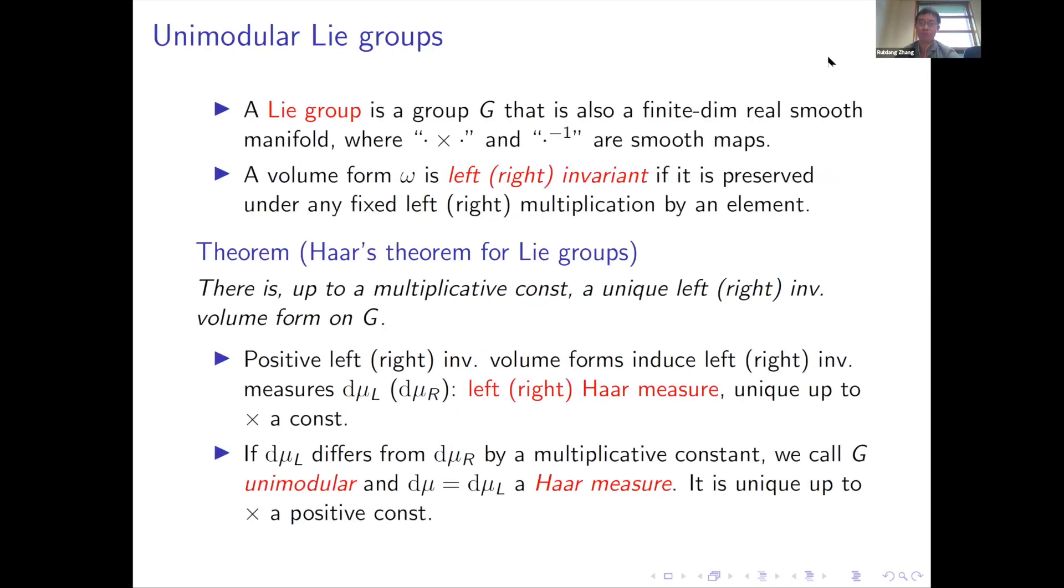So fortunately, the previous speakers already explained what... By the way, can you hear me very well? Okay. So a Lie group is a group that's also a smooth manifold that's compatible with the group structure. And on any Lie group, there's a left Haar measure, there's a right Haar measure that are invariant with respect to left multiplication and right multiplication. And those are unique up to multiplying by a constant. So if they happen to coincide with each other, then we call the group unimodular.